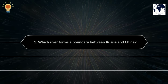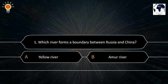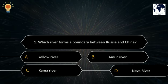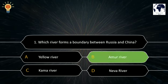Question number 1. Which river forms a boundary between Russia and China? A. Yellow River. B. Amur River. C. Kama River. D. Neva River. The correct answer is B. Amur River.